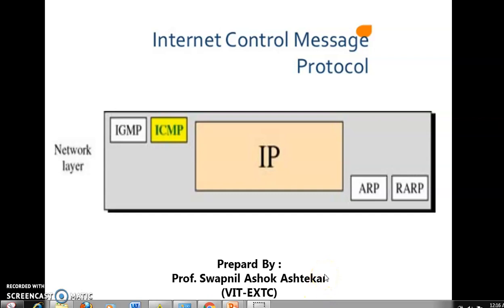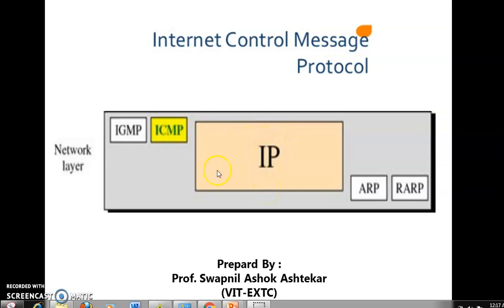Hello students. Today I have prepared a video on a topic called ICMP, which stands for Internet Control Message Protocol. This is a protocol which lies under the network layer. It is a very important protocol as it helps the IP protocol become reliable in some way. As we know, IP is an unreliable protocol, so we will try to understand how ICMP makes the network layer reliable.